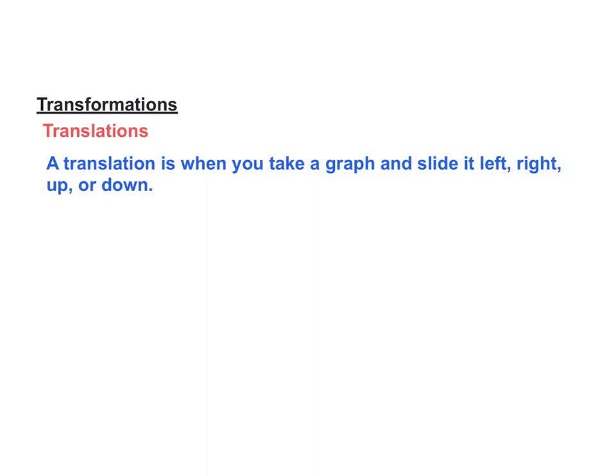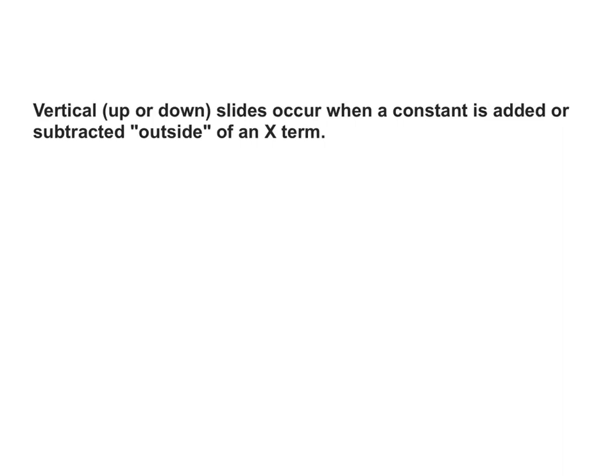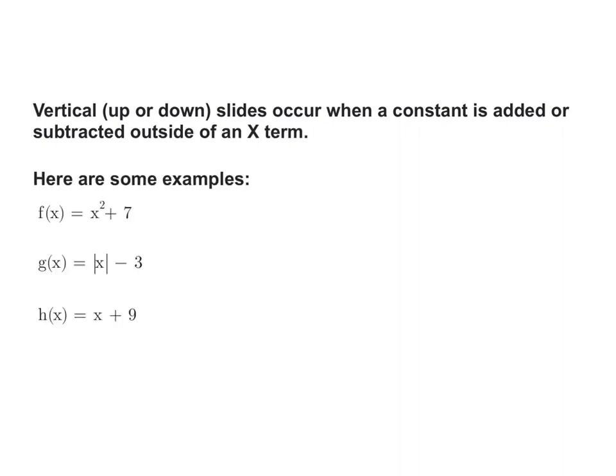First off, we have translations, and translations are just taking the graph and sliding it. So you're going to slide it left, right, or up or down, and that's what a translation is, also known as a slide, because it is a slide. So here's how we know when a graph moves up or down or left or right. We have to look at a vertical slide or an up or down slide happens when we take a number and add it or subtract it to the outside of the next term, and I put outside in quotation marks because it's not in with the x. You'll see what I mean. There will need to be some grouping symbols to be inside. So here are some examples.